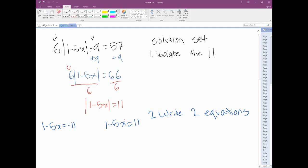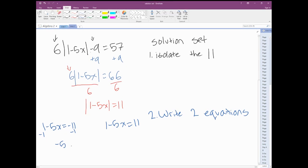From here, we're just going to solve this like we would a normal equation. Subtract 1 to get rid of that. We get negative 5x equals negative 12, and over here negative 5x equals 10.